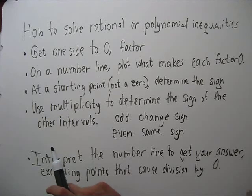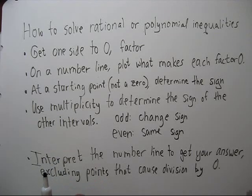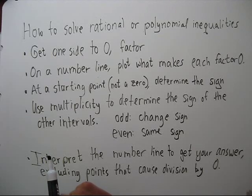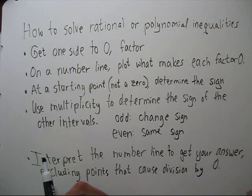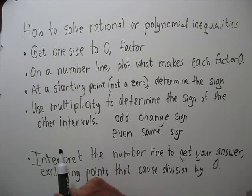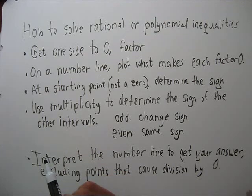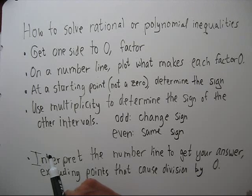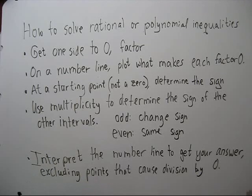Then you use multiplicity to determine the sign of the other intervals. If it's odd, you will change the sign as you cross that zero. If the multiplicity of the factor is even, then you'll have the same sign as you cross that zero.